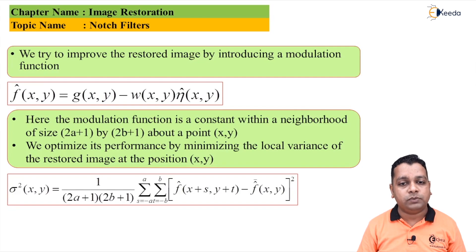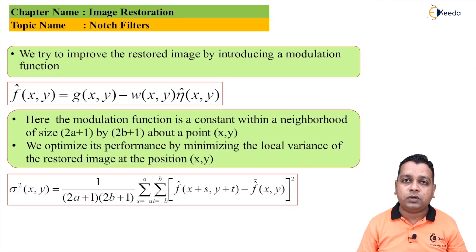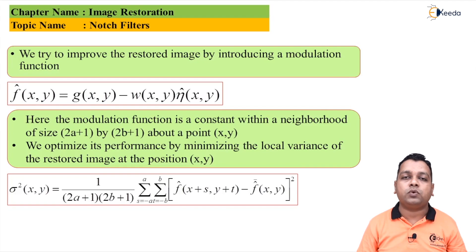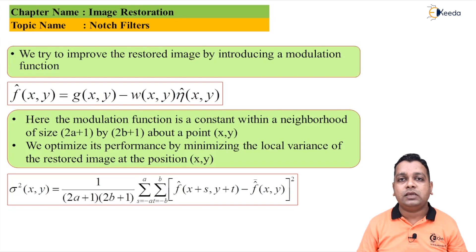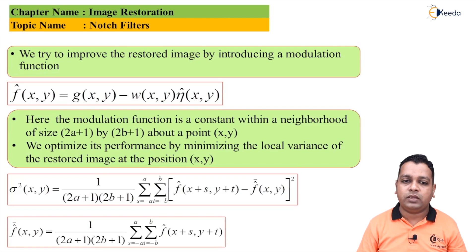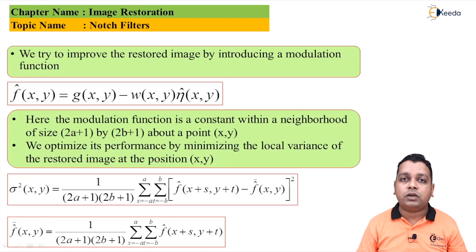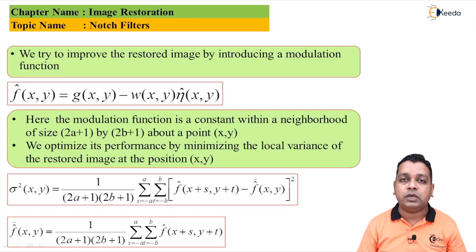The modulation function performance is optimized by minimizing the local variance of the restored image at position (x,y). The variance σ²(x,y) is computed as 1/((2a+1)(2b+1)) times the double summation over s from −a to +a and t from −b to +b of [f̂(x+s, y+t) − f̂_bar(x,y)]². Here f̂_bar(x,y) is the local mean computed over the same neighborhood.